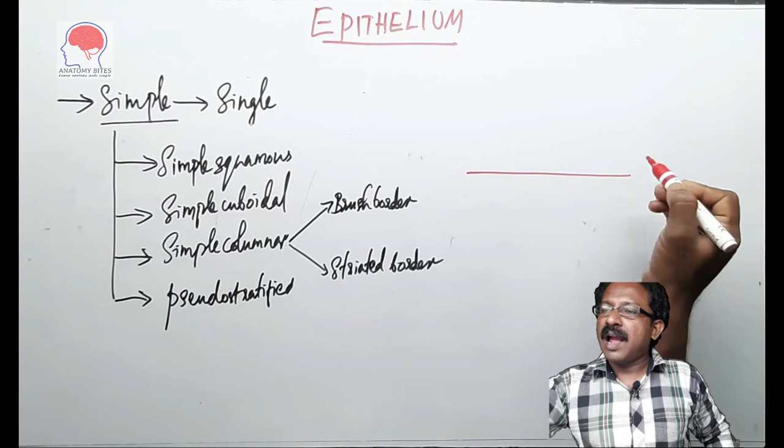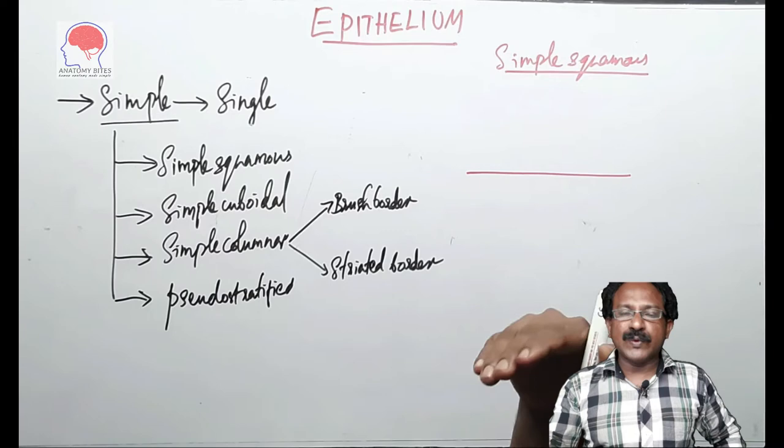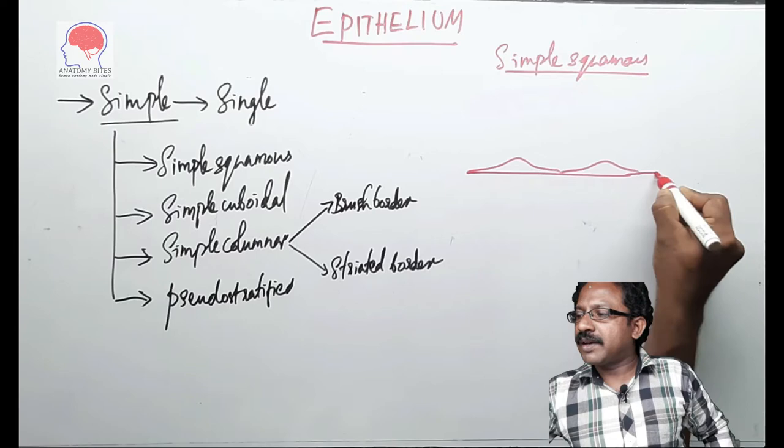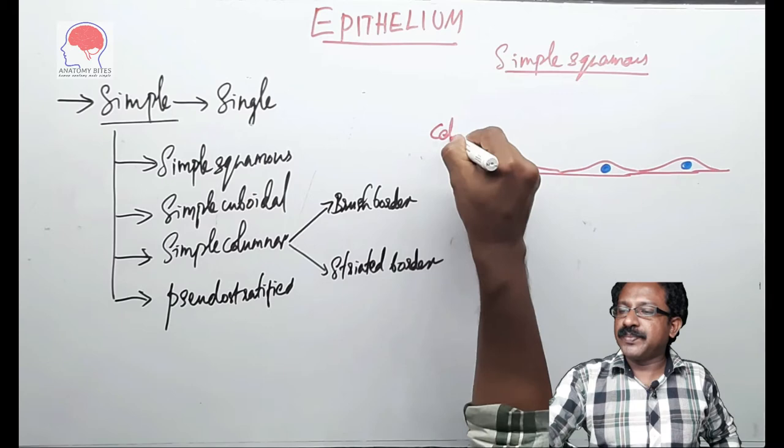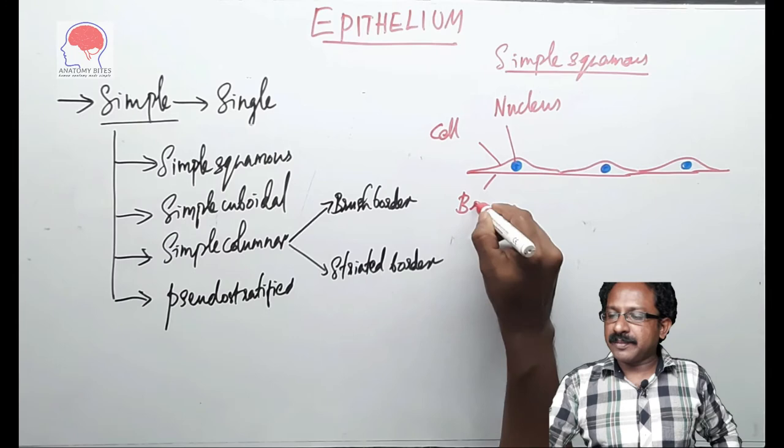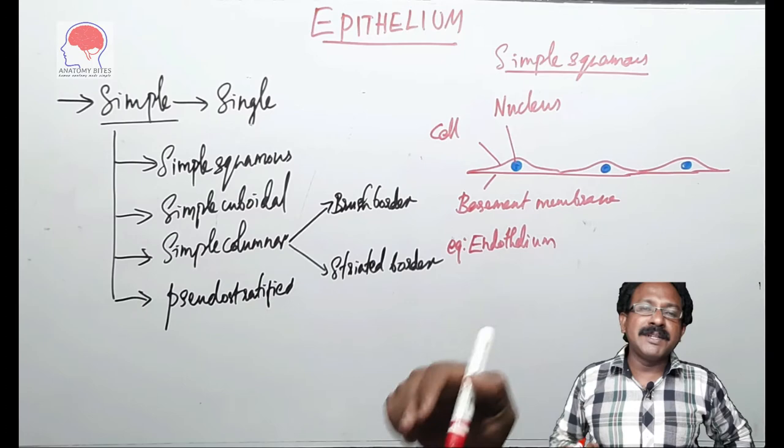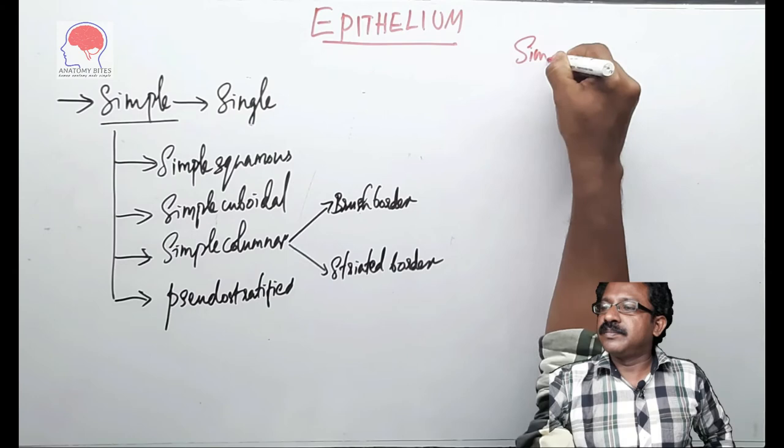Whenever you draw an epithelium, start with the basement membrane. Here I am drawing the simple squamous. Squamous means they are tile-like, they are scale-like. They are flat cells. When we take a section of the epithelium through its thickness, we can see that the cells have an elevated part and a thin part and it has a spherical nucleus placed in the thickest part of the cell. So here is the cell. There is a nucleus and there is basement membrane. Example of simple squamous epithelium is endothelium. Endothelium is the lining epithelium of blood vessels. Alveoli of lung. All these are the examples of simple squamous epithelium.